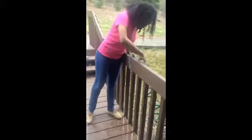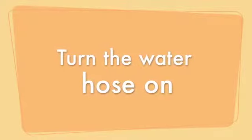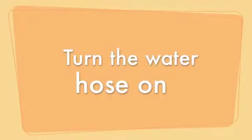First we want to take the water hose to the railing. Next we're going to turn on the water hose.